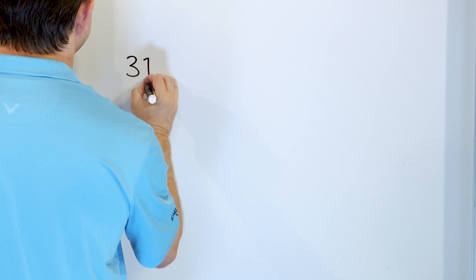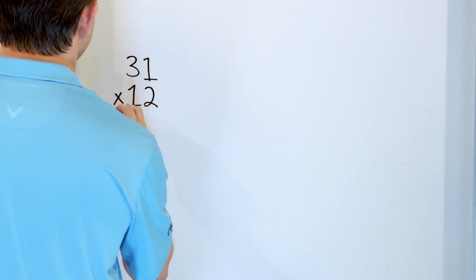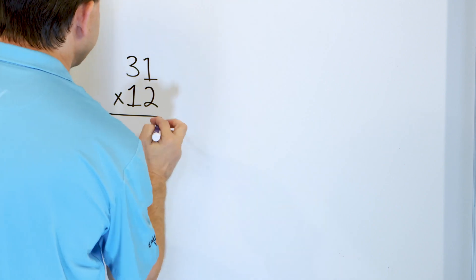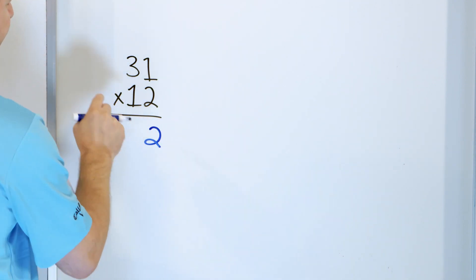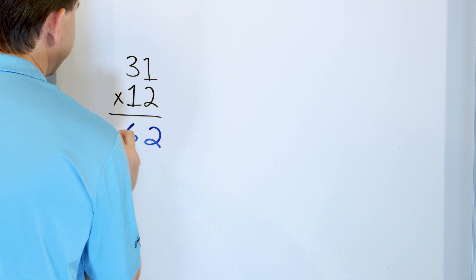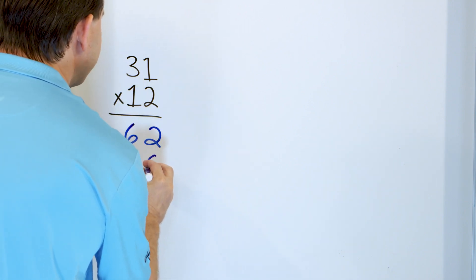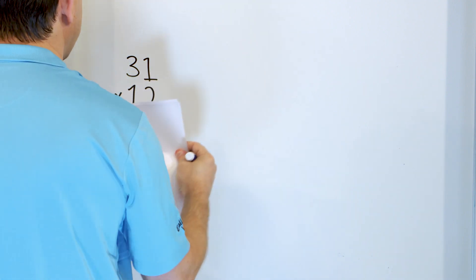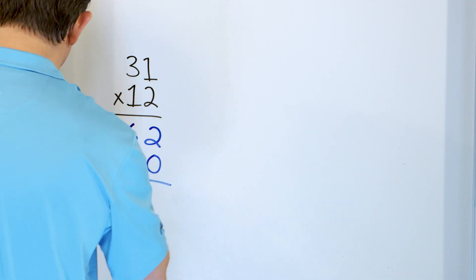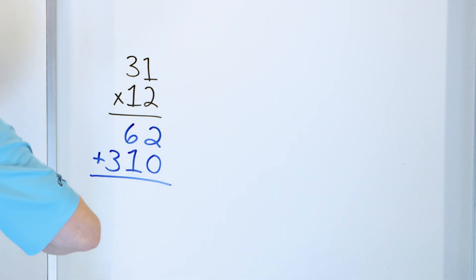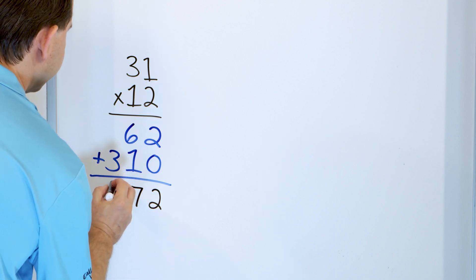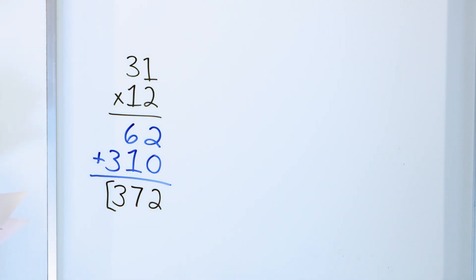Only two more problems. Let's take a look at 31 multiplied by 12. We cover up the 1 and say: 2 times 1 is 2, which goes right here. Then 2 times 3 is 6, which goes right here. Now I need to multiply by the 1, so I add a single 0 in the right column. Then 1 times 1 is 1, and 1 times 3 is 3. Then I add: 2 plus 0 is 2, 6 plus 1 is 7, and 3 plus 0 is 3. So the answer is 372.